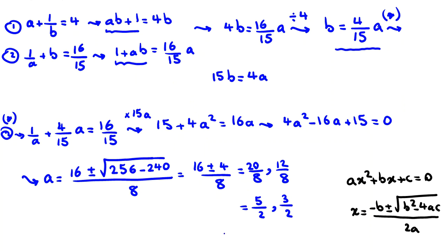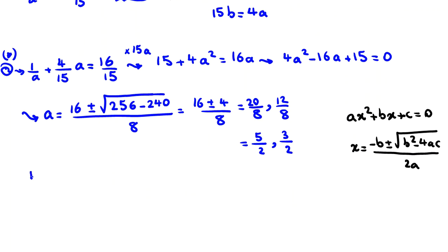So we found these two answers for a. Now here we want to find b. b was 4 over 15 a. So the first one, a is 5 over 2, and b is 4 over 15 times this.